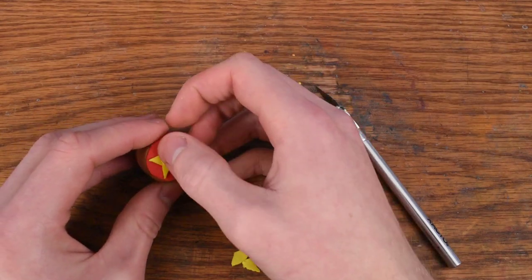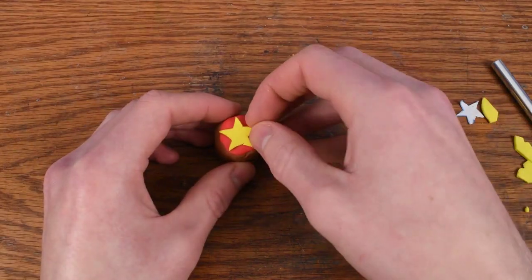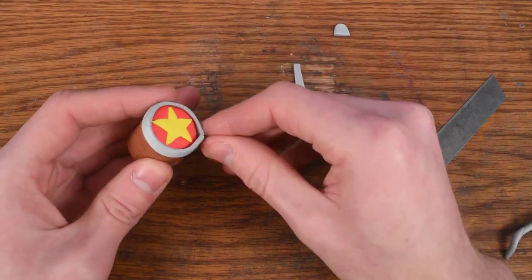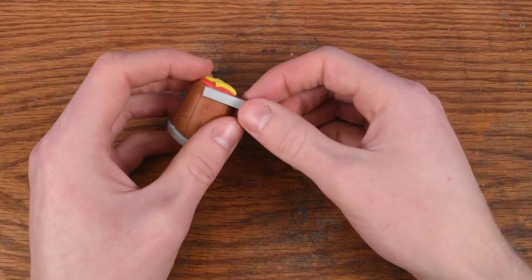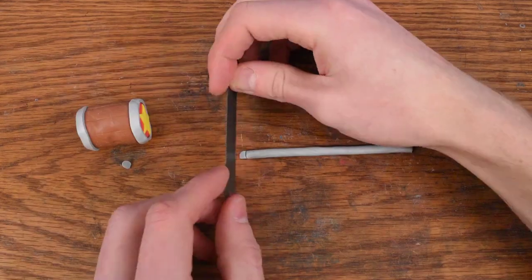And we'll need two of these stars. One goes on each side of the hammer. Here's the second star. And now we can take some silver clay, or if you don't have silver clay, gray works just fine. Silver just has a bit more of a metal look to it.